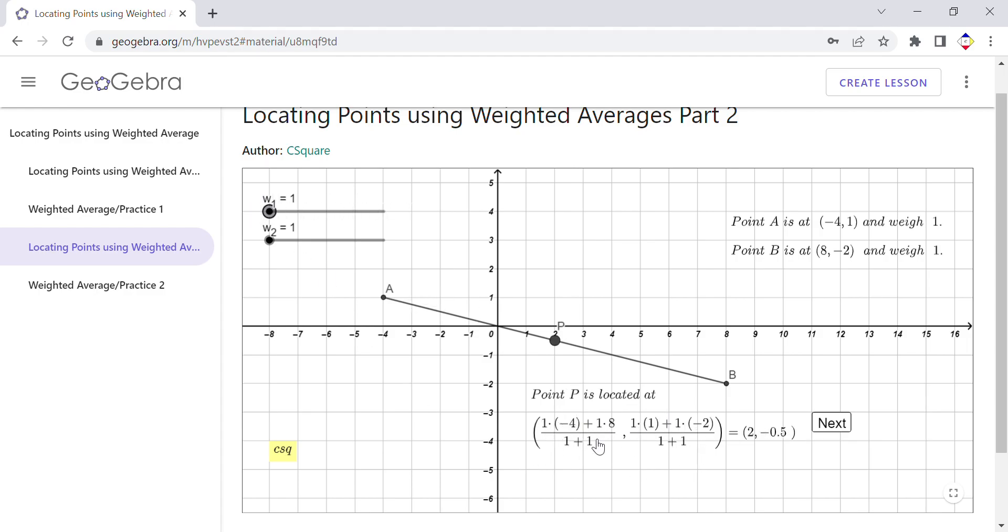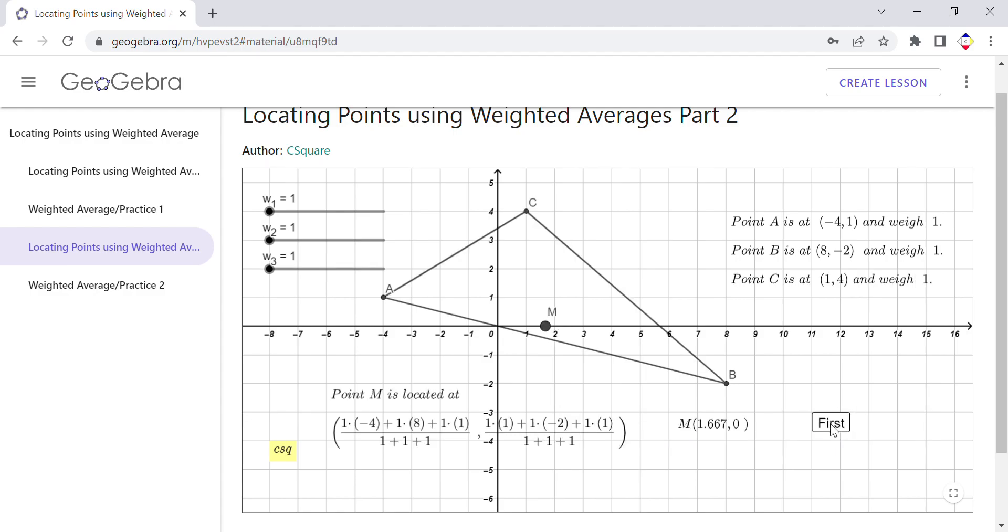This is the formula again. Watch the lesson and then practice. You're going to see that also in a moment. You can click on Next. This is very similar, but now we have three points. Again, keep one of them at 1 and change the weight for the others.